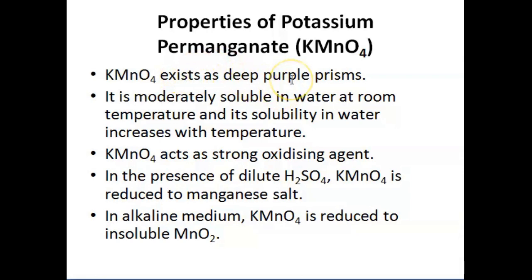Potassium permanganate exists as deep purple prisms. It is moderately soluble in water at room temperature and its solubility increases with temperature. KMnO4 acts as a strong oxidizing agent. In the presence of dilute H2SO4, KMnO4 is reduced to a manganese salt. In alkaline medium, KMnO4 is reduced to insoluble MnO2. In neutral medium, KMnO4 is reduced to manganate.